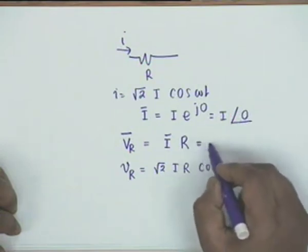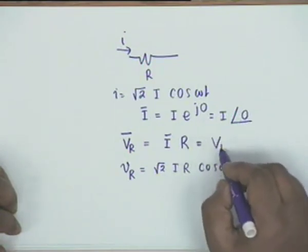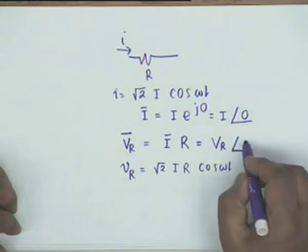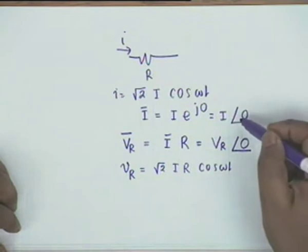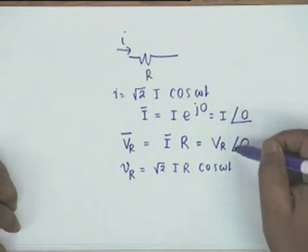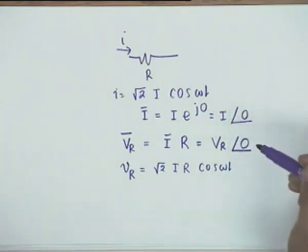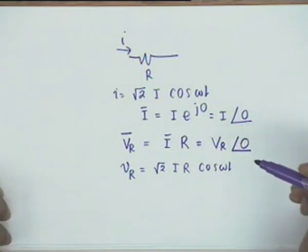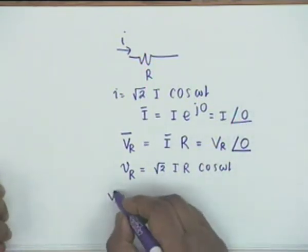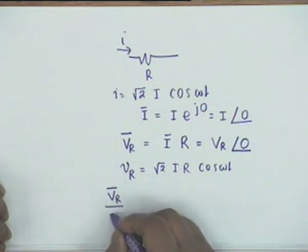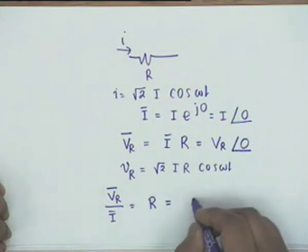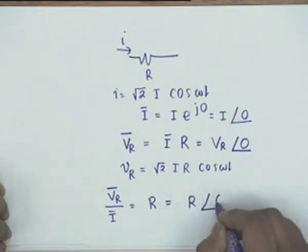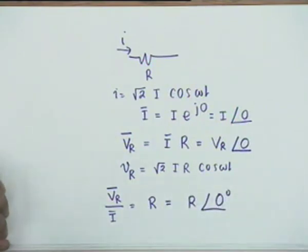The phase is 0, so there is no phase change between the current and the voltage — true in the time domain and also true in the transform domain. The ratio of the voltage phasor to the current phasor is simply equal to R, which you can write as R at 0 degrees.